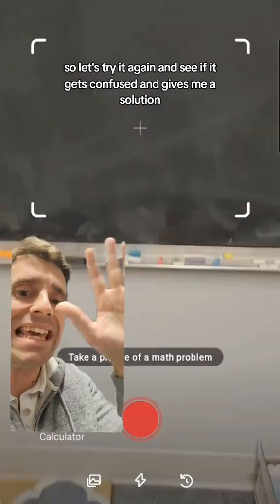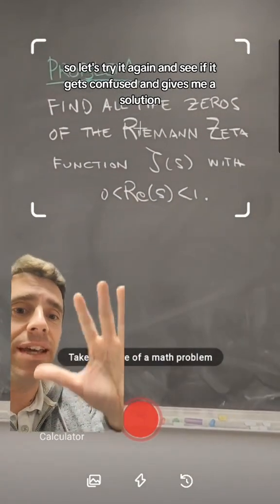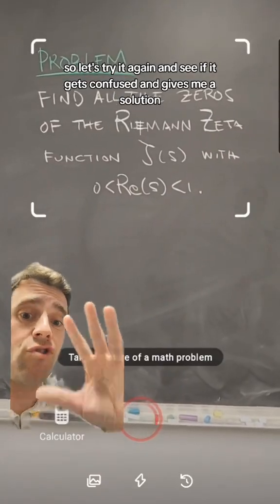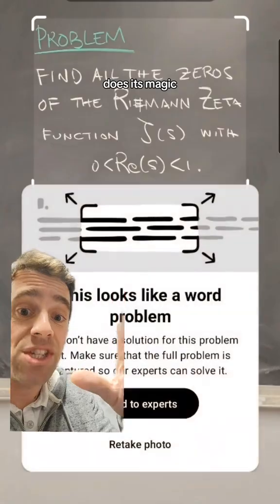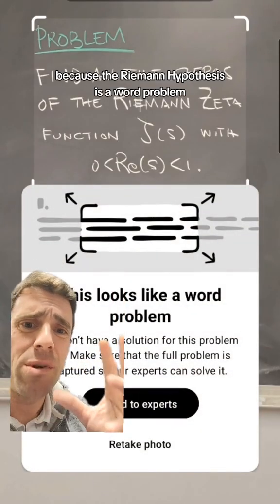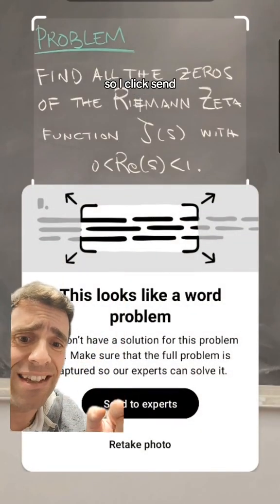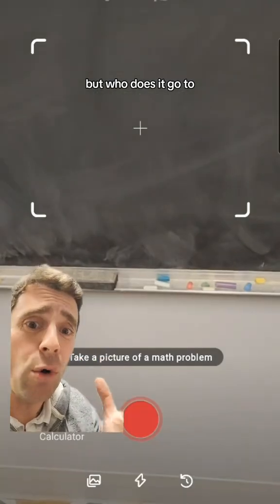So let's try again and see if it gets confused and gives me a solution. So I did it again. It does its magic, and it says send to the experts because the Riemann hypothesis is a word problem. So I click send, but who does it go to?